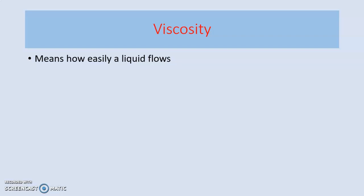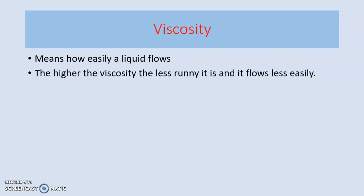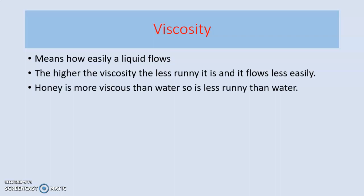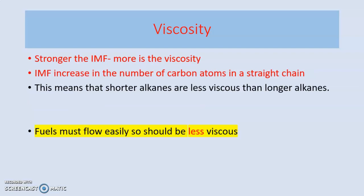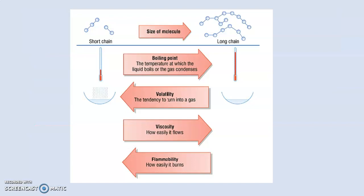Next, let's look into viscosity. Viscous means how easily a liquid flows. Honey is quite gloopy and viscous, so it is less runny and flows less easily than water. The stronger the intermolecular forces, the higher the viscosity — all the particles are clumped together and flow with difficulty. Bigger chain alkanes have stronger intermolecular forces and will therefore be more viscous. A good fuel should flow easily — you want petrol to flow quickly at the petrol station, not drip out like honey. So a fuel should be less viscous, meaning long-chain alkanes will be more viscous and less desirable.